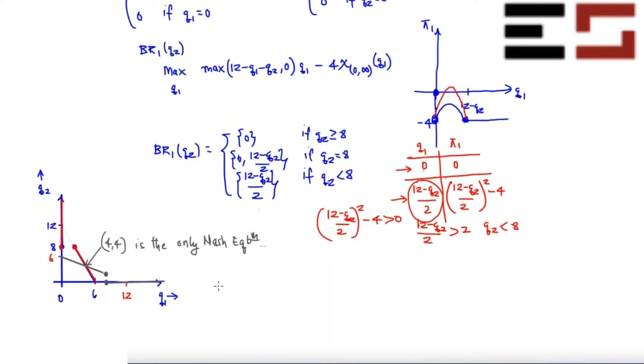So again, I'm going to give you the same type of demand function, exactly the same demand function. Let's say the demand function is max of 12 minus Q comma zero.